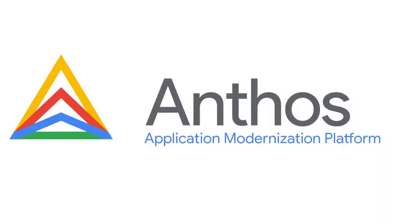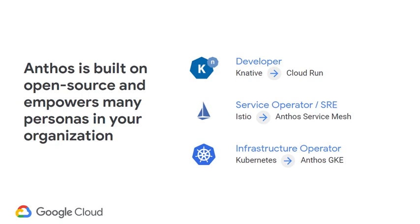Let me now talk about Anthos, our application modernization platform. It's not just one piece of software but several things coming together. Anthos is built on open source and empowers many personas in your organization — whether that's developer productivity, making it easier for the infrastructure person, or SREs wanting to monitor the system. The open-source technologies are Knative, Istio for the service mesh, and Kubernetes for container orchestration. On the managed side: Kubernetes is Anthos GKE, Istio is Anthos Service Mesh, and Knative is Cloud Run — fully managed versions of these services available on GCP.